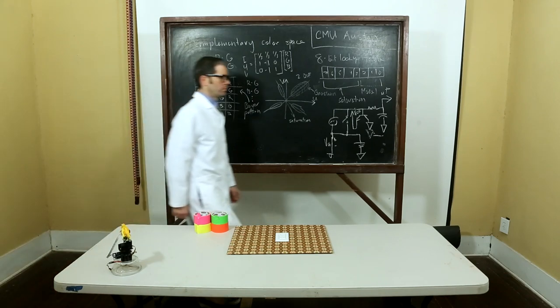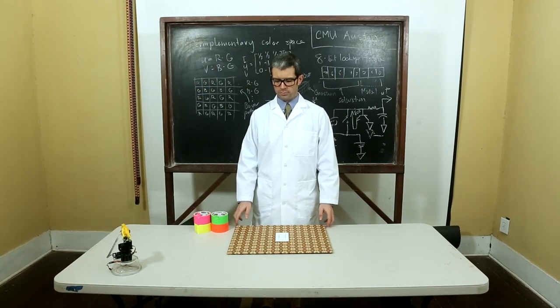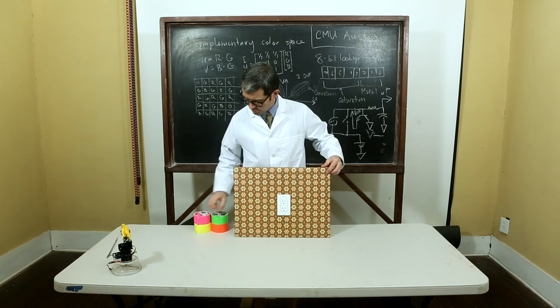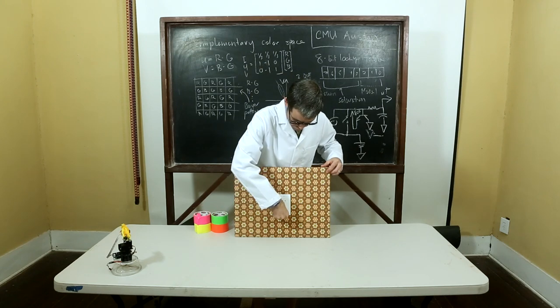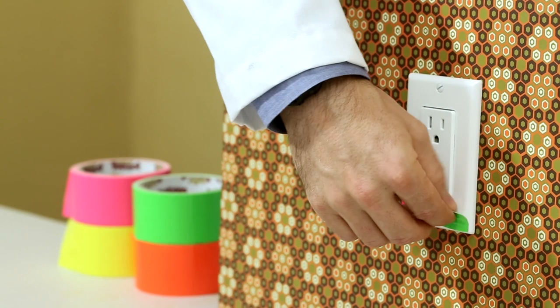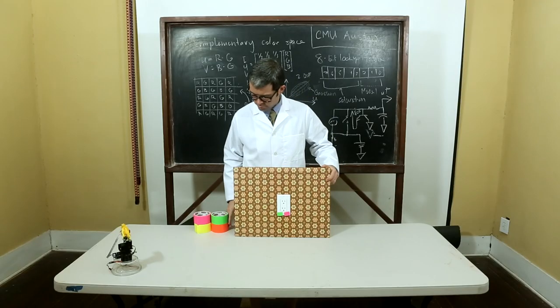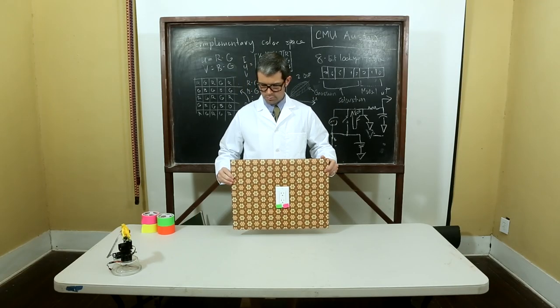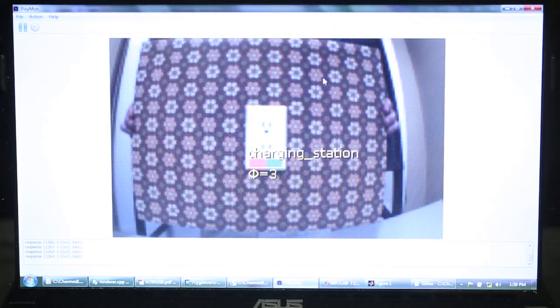Color codes can also be used to detect objects. What is a color code? Color codes are two or more tags placed close together. Pixie can decode and report them as special objects. Here's a color code to identify a charging station. With color codes, Pixie also reports the angle.